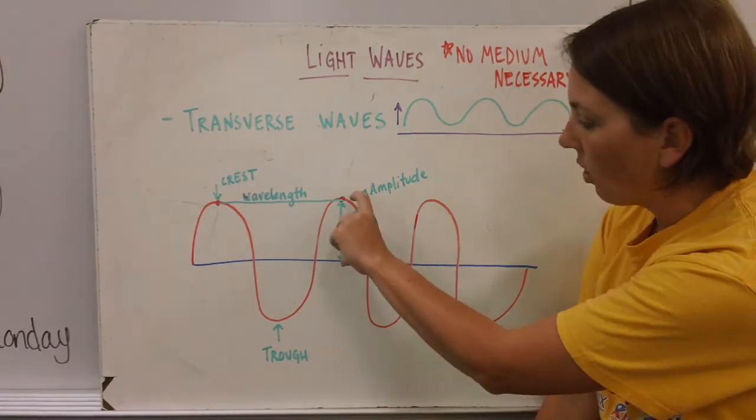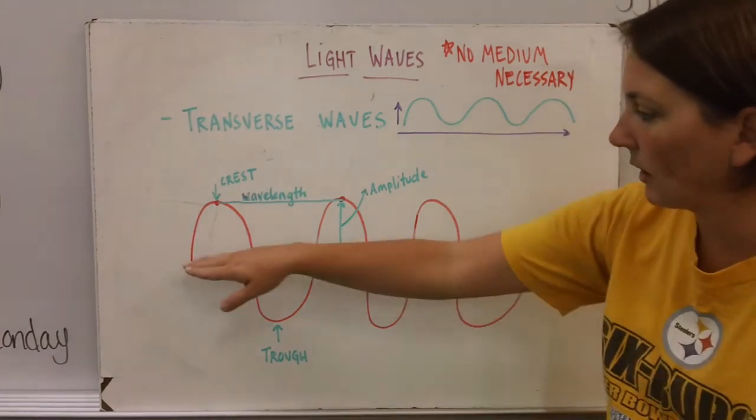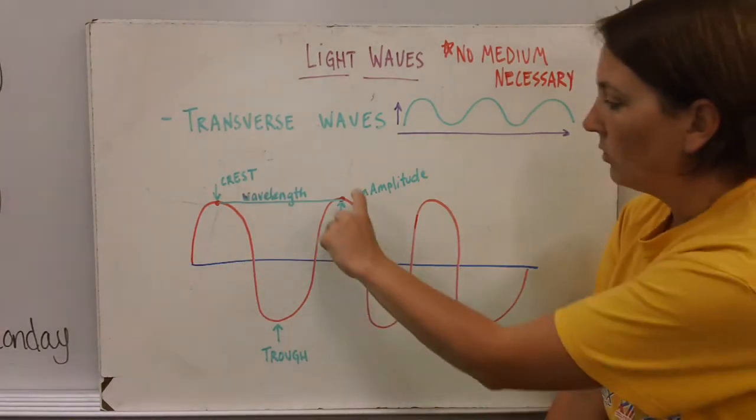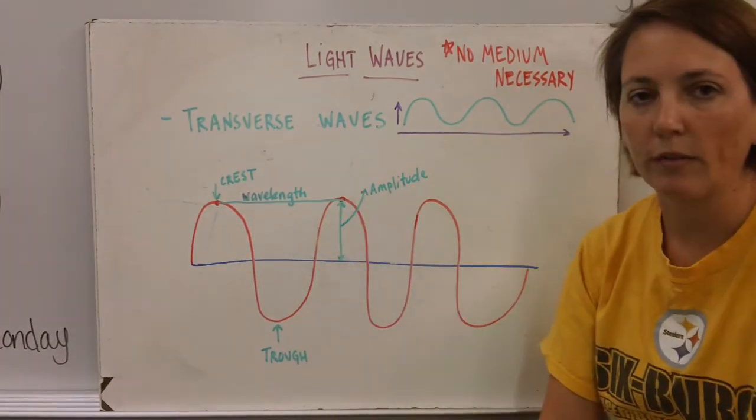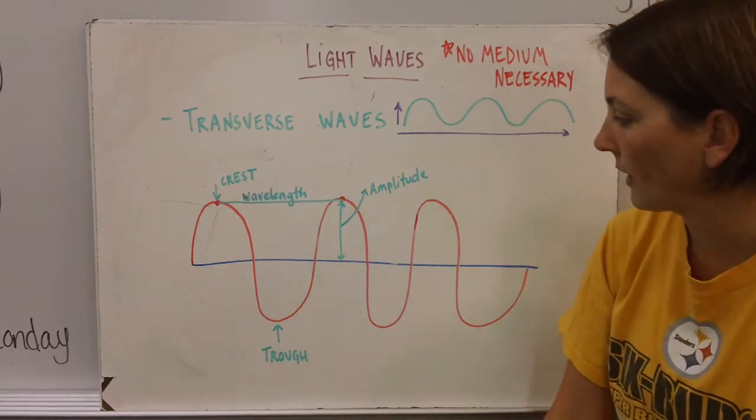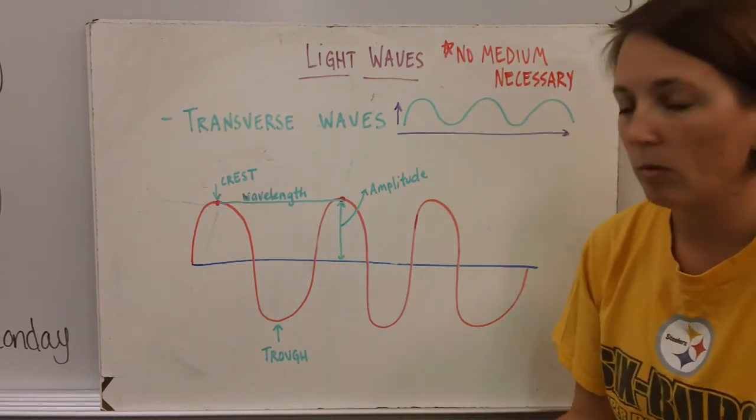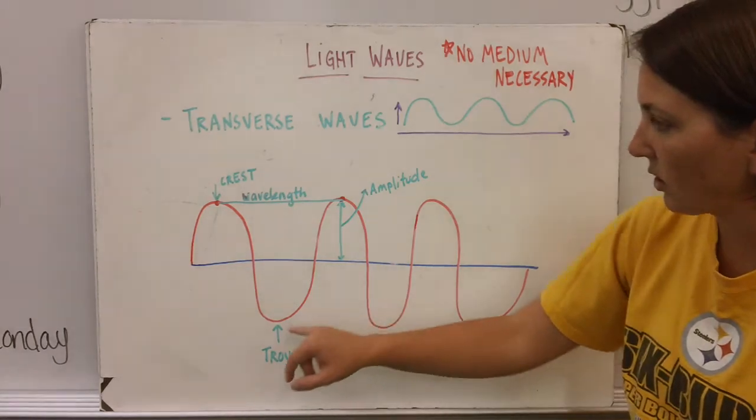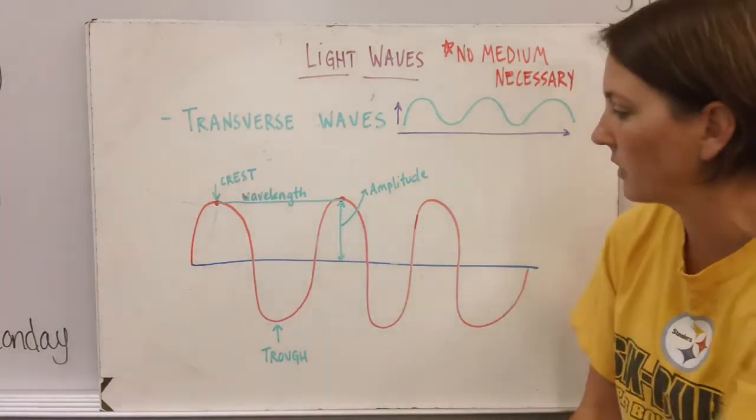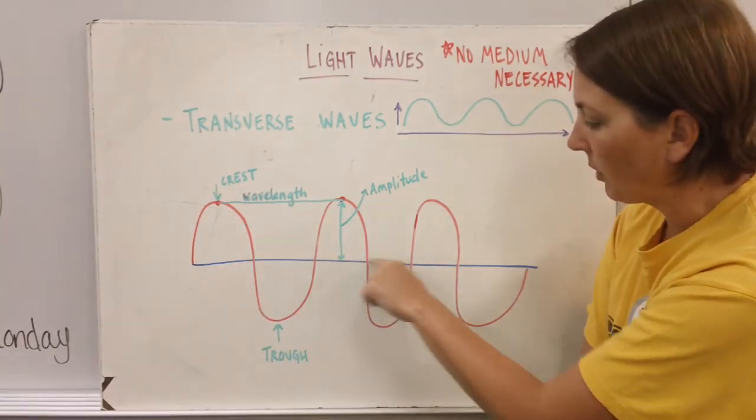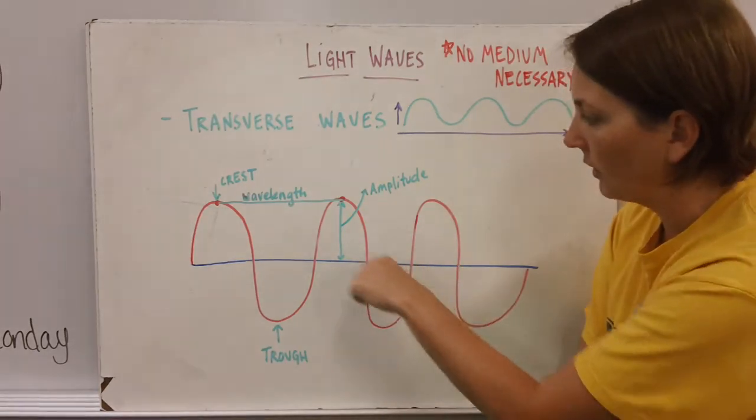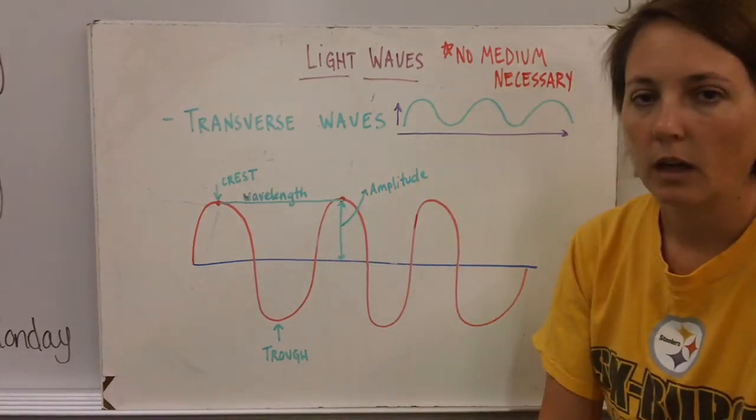Amplitude is how tall is the wave. Now we have this starting line of zero. Amplitude is the height of this wave from that starting line to the crest. One thing that people always mix up is they say amplitude is crest to trough and that's not the case. Amplitude is simply from our line of zero which is my blue line here to the top of the crest.